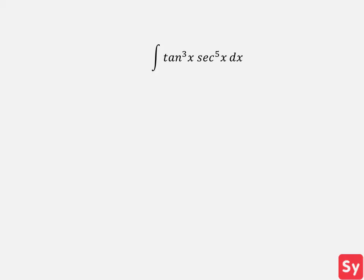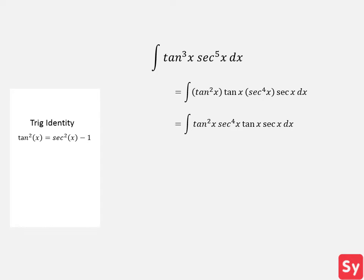Here's our first example. We have the integral of tangent of x cubed times secant of x to the fifth with respect to x. First we want to save a factor of secant of x times tangent of x, so we'll take out one tangent of x from tangent of x cubed and one secant of x from secant of x to the fifth. Now we can reorganize and rewrite how it looks. Next we'll use the trig identity tangent squared of x equals secant squared of x minus one, and replace tangent squared of x in the integrand with this.